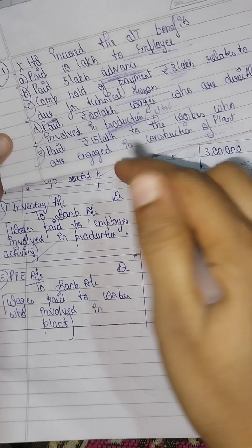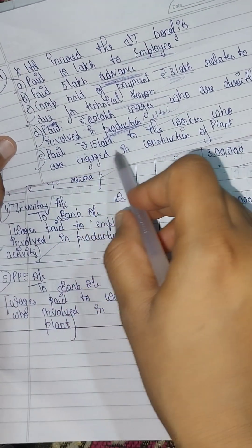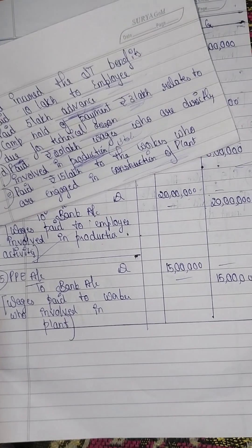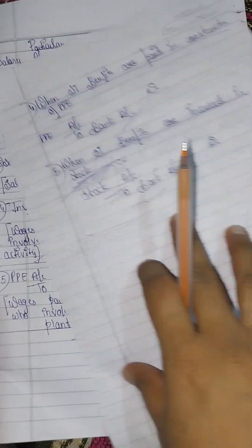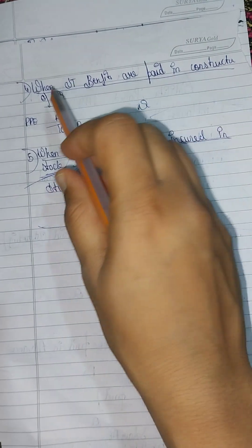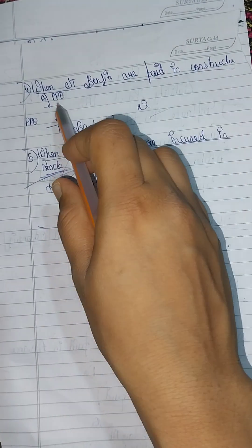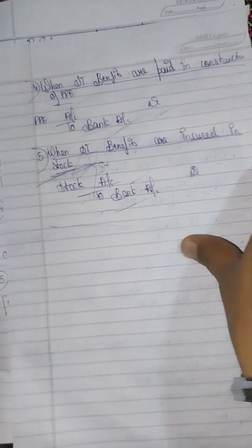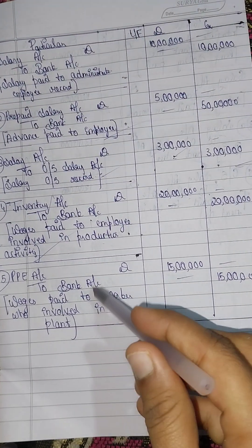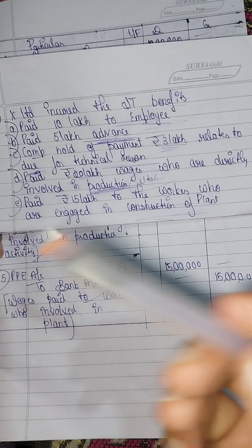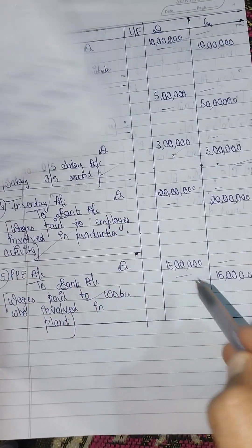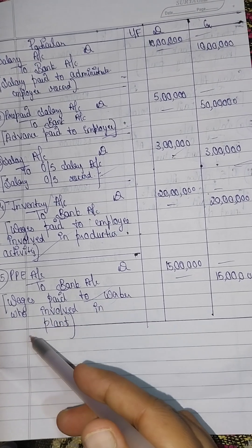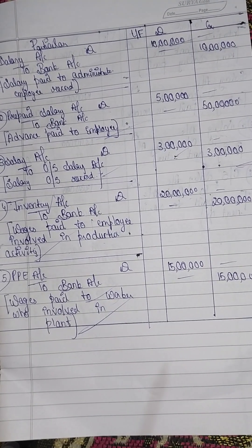Next, paid rupees 15 lakh to the workers who are engaged in construction of plant — that is construction of plant and property equipment (PPE). The entry is: PPE account debit to bank account, as it is 15 lakh rupees. Narration: wages paid to workers involved in plant construction.